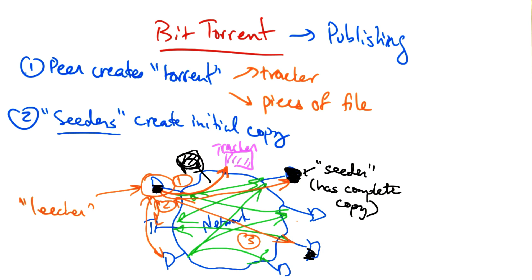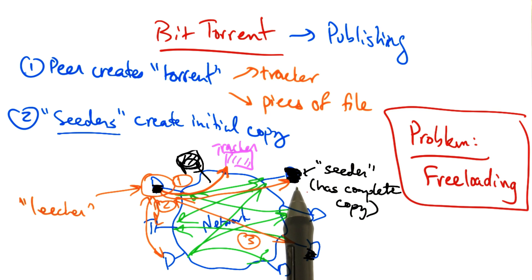Previous peer-to-peer file sharing systems used similar swapping techniques. But a problem that many of them faced, and which BitTorrent solved, is called freeloading. Whereby a client might leave the network as soon as it finished downloading a copy of the file, not providing any benefit to other clients who also want the file.